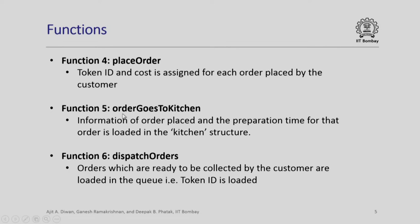Once an order is placed, it goes to the kitchen. We store not only the order information in the kitchen array, but also the preparation time for that order. The preparation time could be random in real life, but for illustration we are using an arbitrary fixed time for every order. Another function required is dispatch_orders — as and when orders become ready, they go to the dispatch queue and can be collected by customers. The key information loaded into the dispatch queue is simply the token ID.